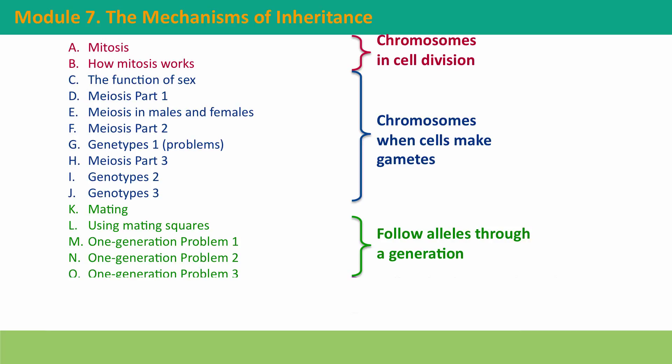We'll then take the next step and fuse the gametes together in mating, thinking about how the new combinations of alleles come together to form the next generation's genotype. And we'll integrate this with the understanding of meiosis to do all the processes through a single generation.